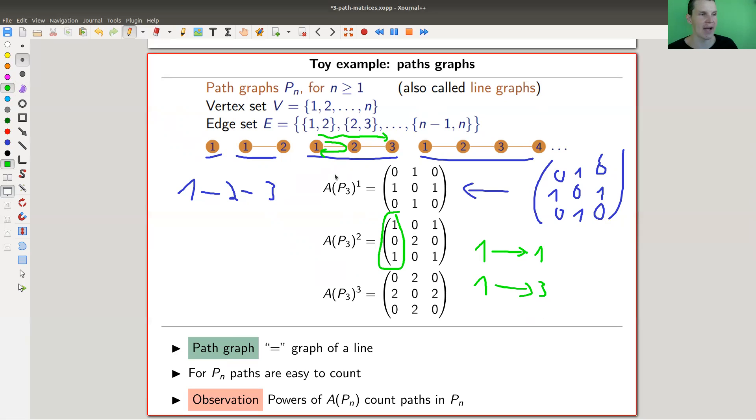The 1 to 3 path is not very hard to see. The 1 to 1 path is also not hard to find - it's just go to 2 and come back. So the count actually works. There are two paths starting at 2 and ending at 2. This is this path and this path. That is this number here. The third power counts the length three paths. So in this case, observation is just that the powers of the adjacency matrix count paths.